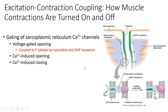This next slide demonstrates how the action potential is actually opening up channels on the sarcoplasmic reticulum. Because of the gating of the sarcoplasmic reticulum, calcium cannot just leave the SR as it pleases. Calcium is withheld within the sarcoplasmic reticulum, and there are certain gating mechanisms on the membrane of the SR that will allow calcium to leave only when an action potential is propagated through the T-tubule.